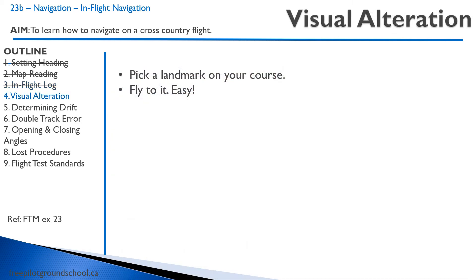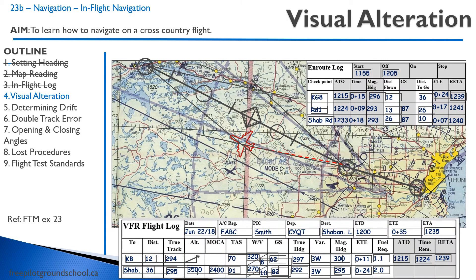Let's talk about being off course and methods of getting back on course. The first is super easy: visual alteration. You look at your map, see you're a bit off course, then just look at a landmark that's on course and fly to that landmark — it's that easy. If we want to determine how many miles off course we are, that's why we drew our 10-degree drift line. Here we can estimate we're approximately 9 to 10 degrees off course on our drift line.